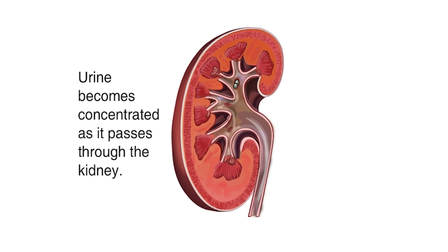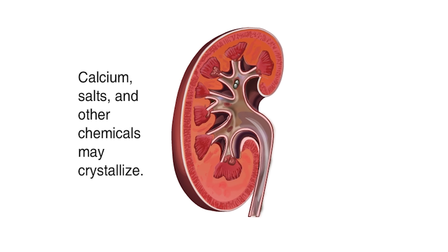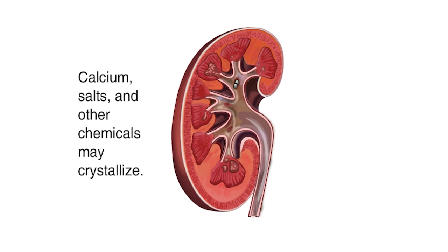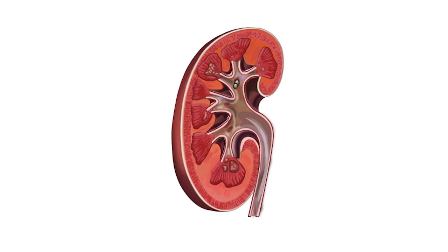As urine passes through the kidneys, it can become very concentrated. When the urine becomes too concentrated, calcium, uric acid salts, and other chemicals dissolved in the urine can crystallize, forming a kidney stone, or renal calculus.